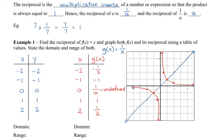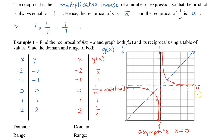The reason the graph doesn't touch the y-axis is because this part is undefined. So we have a line on our y-axis called the asymptote. The equation of this asymptote is x equals 0. We also have a horizontal asymptote on the x-axis. As x gets bigger and bigger, when we take the reciprocal, we will never actually reach 0 but we'll be approaching 0. So this horizontal asymptote has equation y equals 0.